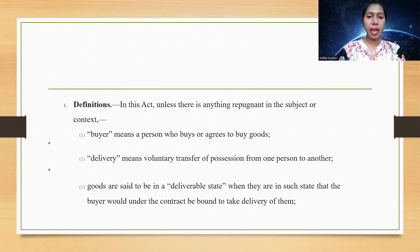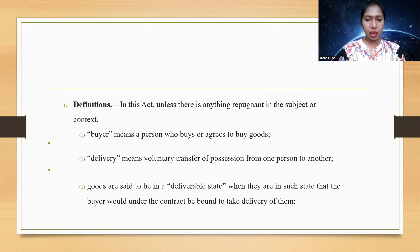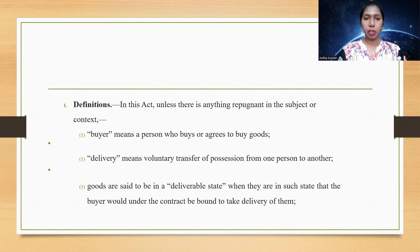Under the definition section of this Act, unless there is anything repugnant in the subject or context: a buyer is the person who buys or agrees to buy goods. Delivery means voluntary transfer of possession of goods from one person to another. Goods are said to be in a deliverable state when they are in such a state that the buyer would, under the contract, be bound to take delivery of them.